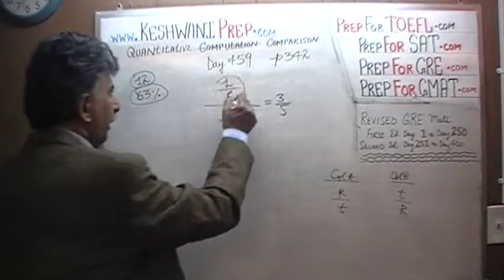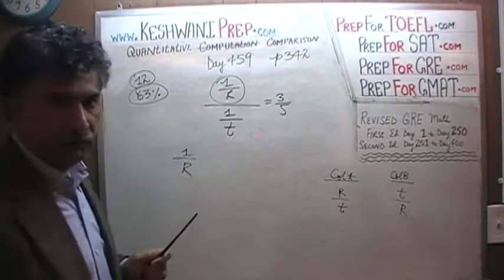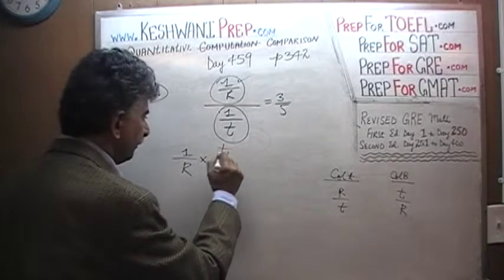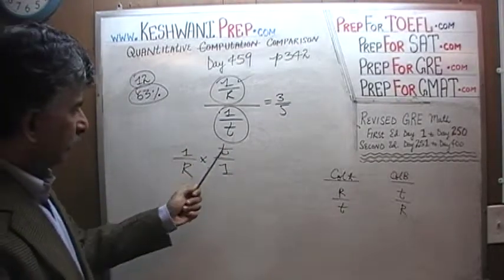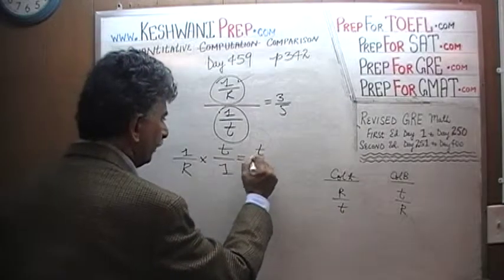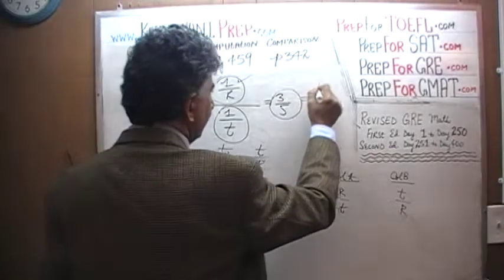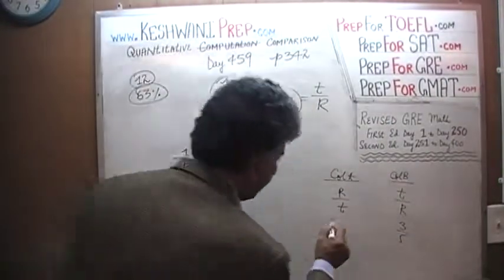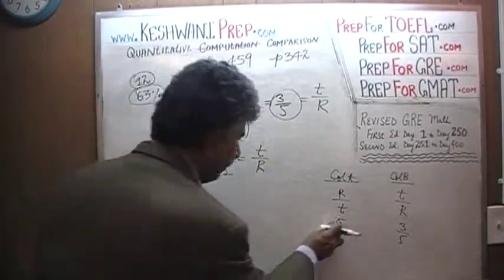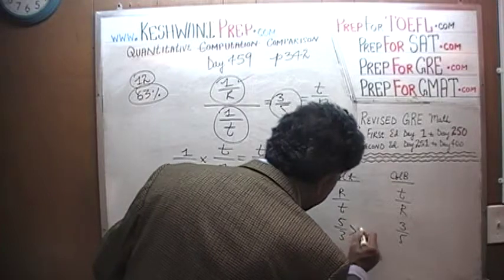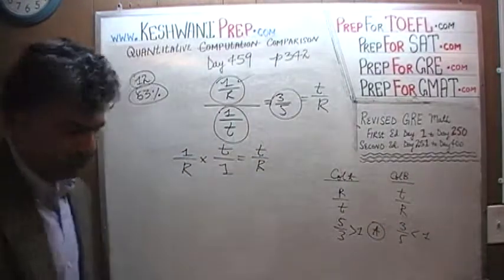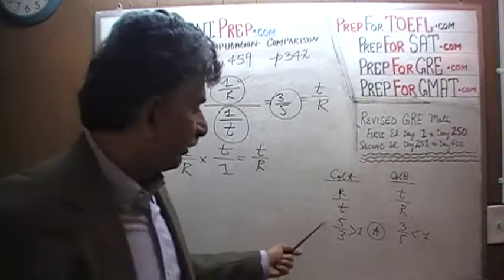Here we go. (1/r) divided by (1/t): when one fraction is divided by another, we take the top fraction and multiply by the reciprocal of the bottom. So 1/t becomes t/1, and that boils down to t over r. We are told that equals 3/5, so t over r is 3/5. That means r over t must be 5/3, which is more than 1, while t over r is less than 1. Therefore the answer is A.